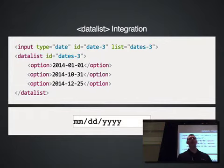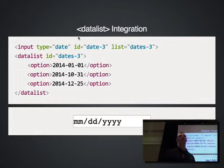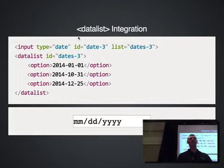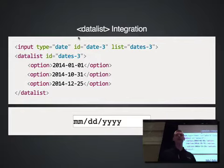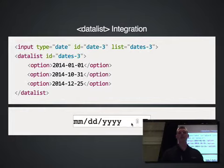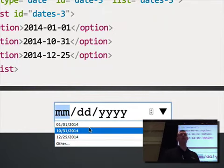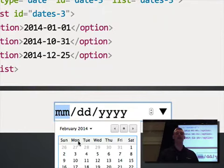One last native integration is data lists. Think of them as autocomplete — basically suggestions. Compared to select boxes where you must pick one of the listed options, data lists use the same option nodes but as suggestions: you might want to pick one of these values, but you can pick anything you'd like. In Chrome, you get a drop-down with the options you provide, and since these are just suggestions, you also have access to a full picker to let you pick whatever you want.